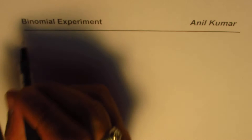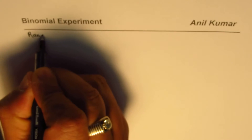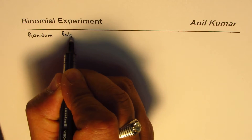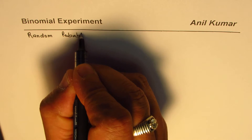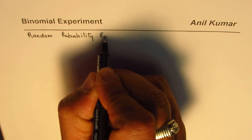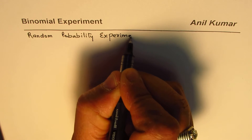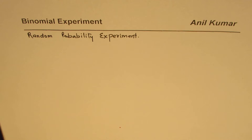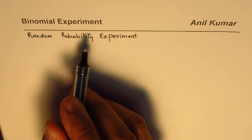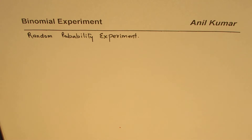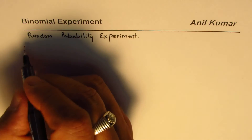I'm Anil Kumar and in this video we will see the characteristics of a binomial experiment. Basically it is a random probability experiment with some criteria. This random probability experiment is well defined and will have different trials. In a binomial experiment all the trials should be independent, so we have independent trials.